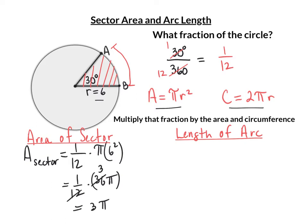Sometimes it will ask for the answer exactly, which would be three pi. Or sometimes it might ask to be rounded to the tenth — plug it in the calculator and round it to the tenth. In this case, we get about 9.4 to the tenth. Three pi is exact; 9.4 is to the tenth.